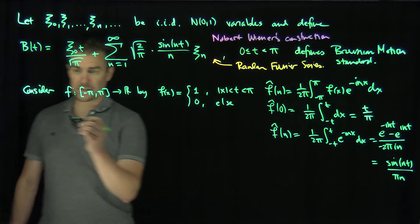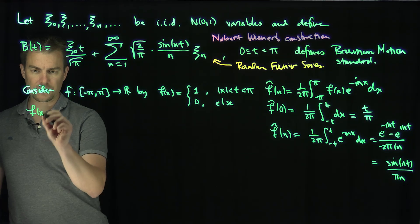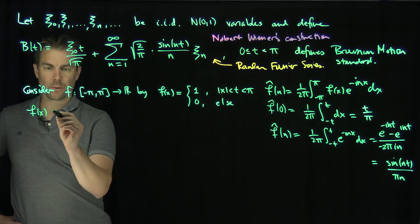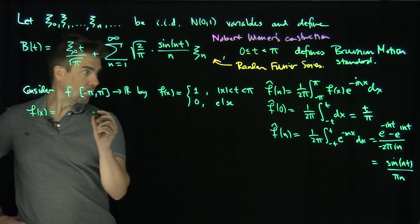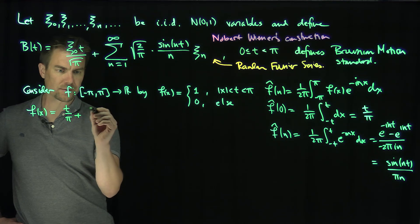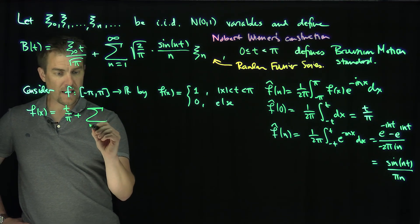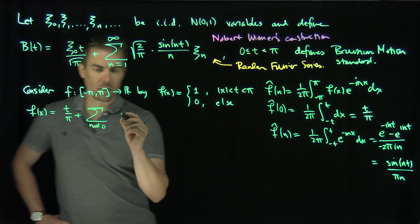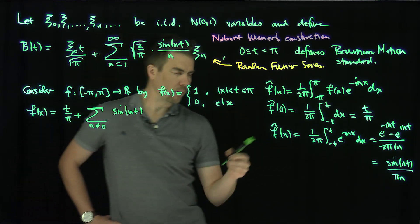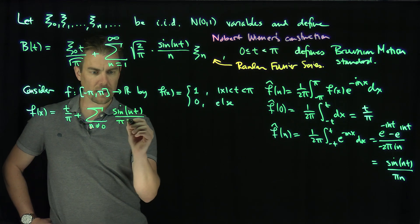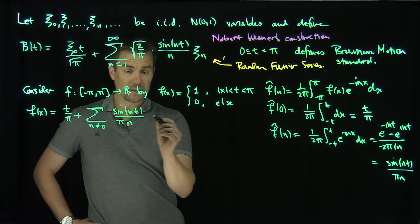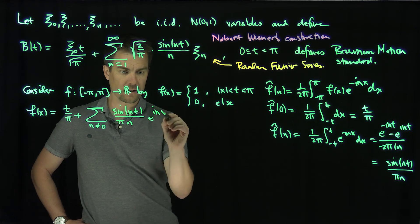And so that says that this function has a Fourier series, f(x) is equal to t over π, plus the sum n not equal to 0 of the sine of nt over πn, and then e^(inx).